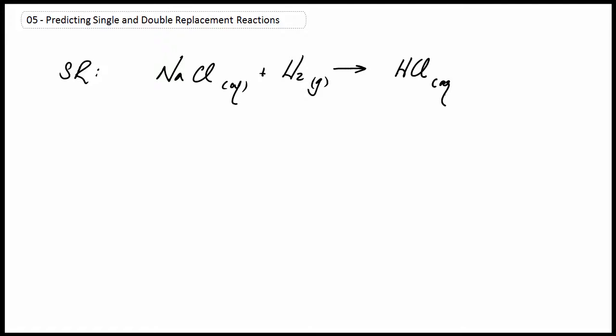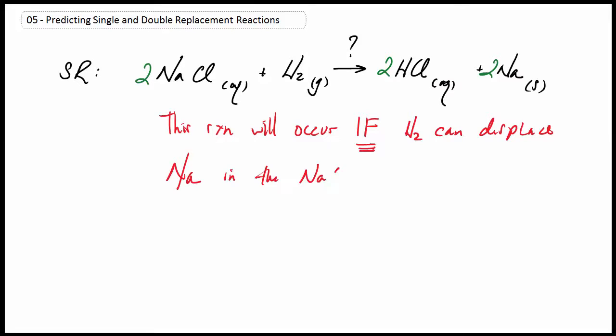Here's a single replacement reaction between sodium chloride and hydrogen gas. Here's a question, will these react to form hydrochloric acid and sodium metal? Well, the reaction will occur if, and really only if, hydrogen gas can displace sodium in that sodium chloride compound.